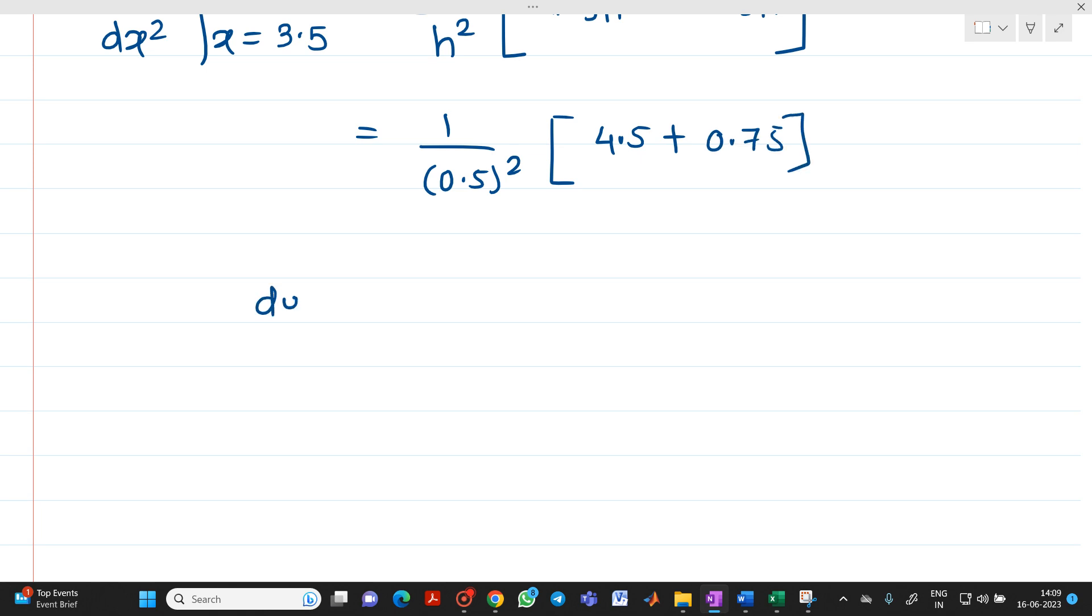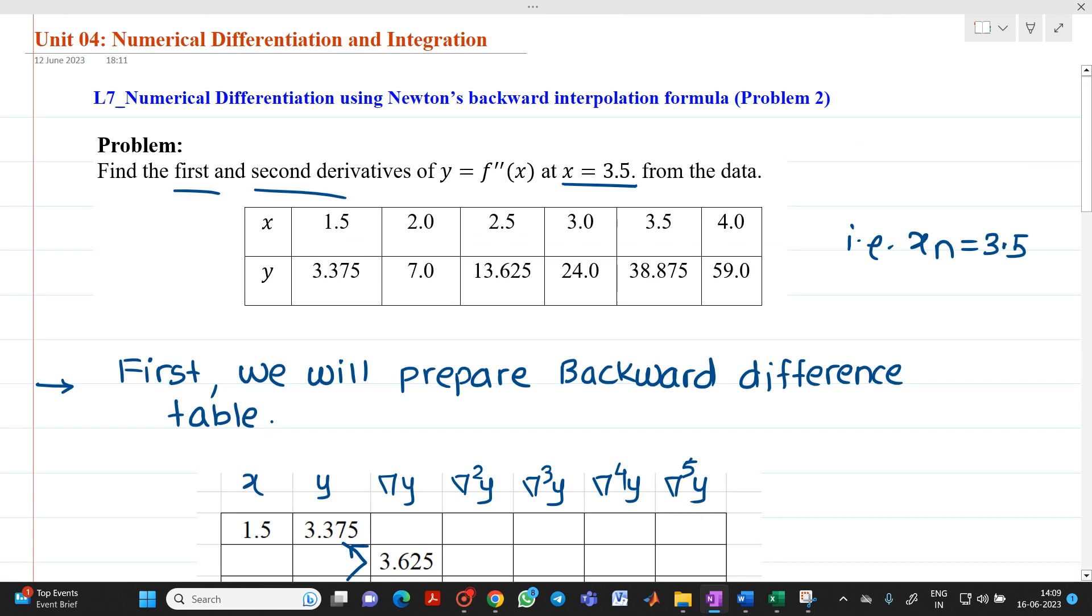So if you solve this on a calculator, you will get d square y upon dx square at x equal to 3.5 will be equal to 4.5 plus 0.75 divided by 0.5 square. So you will get answer as 21. So in this way we are going to solve a numerical of numerical differentiation by using Newton's backward interpolation formula.